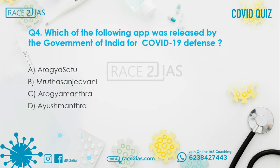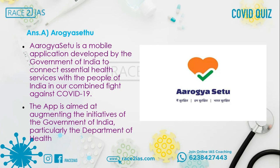Question number 4: Which app was released by the Government of India for COVID-19 defense? Option A: Arogya Setu. Option B: Muratya Sanjivani. Option C: Arogya Mantra. Option D: Ayush Mantra. The right answer is Option A, Arogya Setu. Arogya Setu is a mobile application developed by the Government of India to connect essential health services with the people of India in the combined fight against COVID-19. The app is aimed at augmenting the initiatives of the government, particularly the Department of Health.